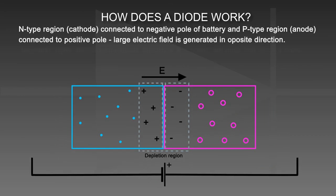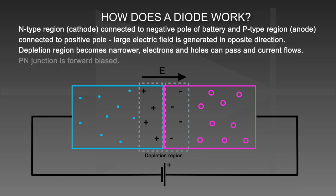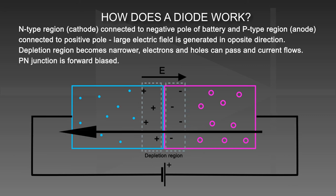When the N-type region (cathode) is connected to the negative pole of the battery and the P-type region (anode) is connected to the positive pole, a large electric field is generated in the positive direction. The depletion region becomes narrower, electrons and holes can pass, and current flows. The P-N junction is forward biased.